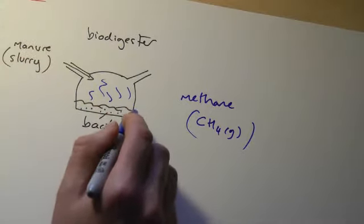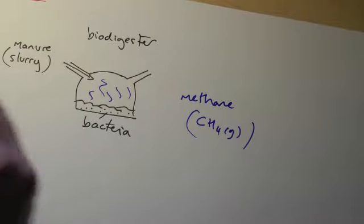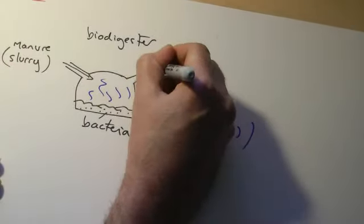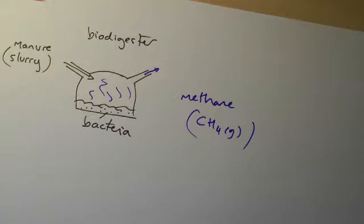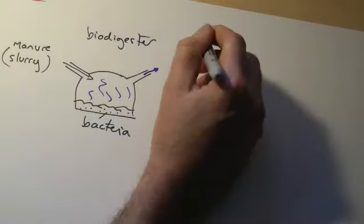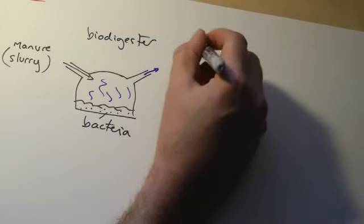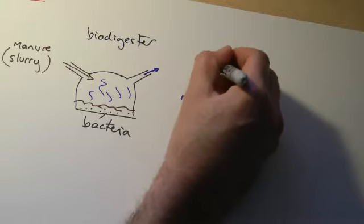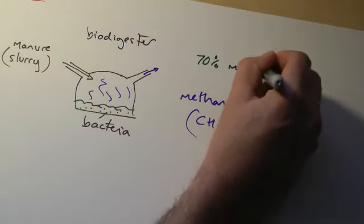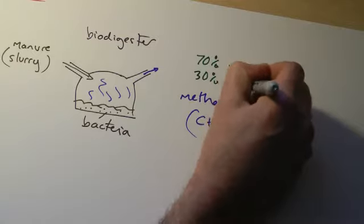It can be used as a fertilizer, but this is a way for isolated places to make lots of useful products from it. Roughly speaking, values taken from the book here, about 70% of the gas that comes off there is methane. The other 30%, mainly carbon dioxide.